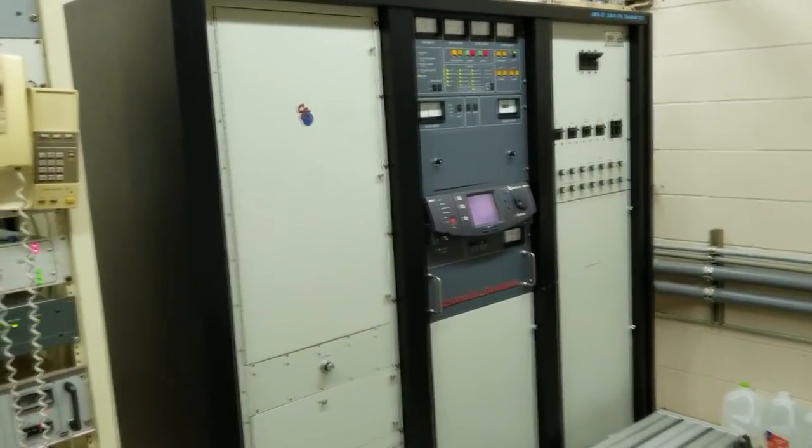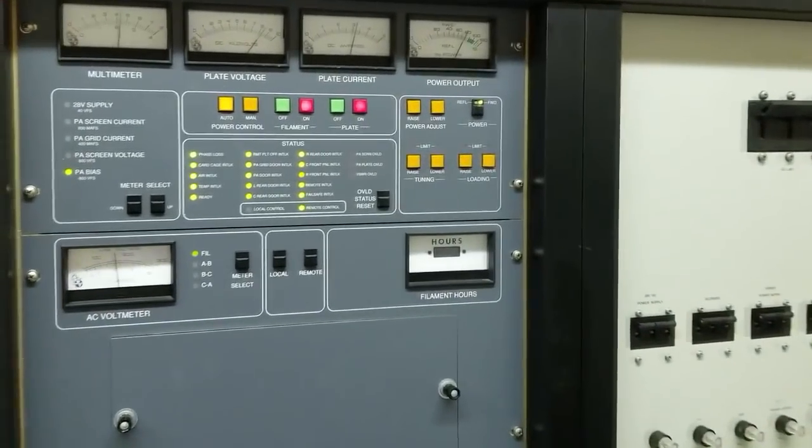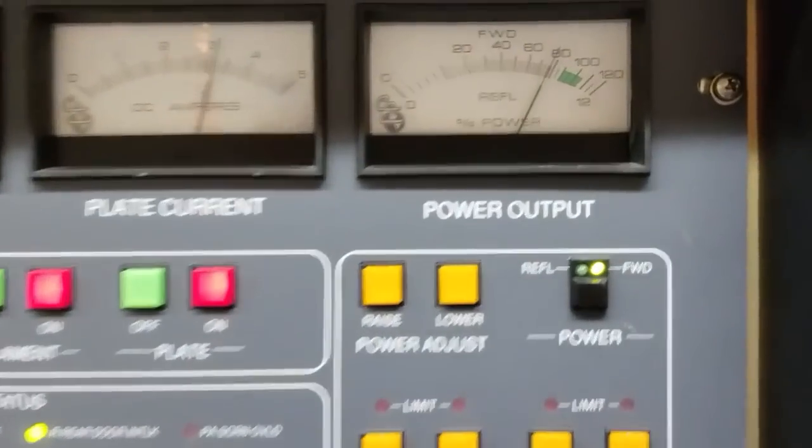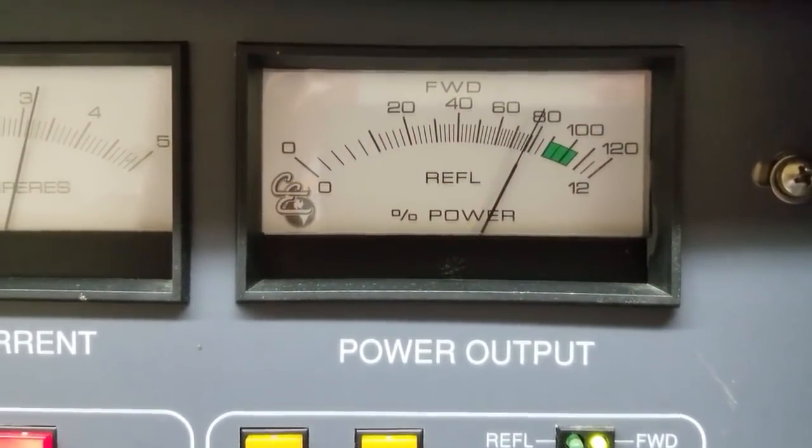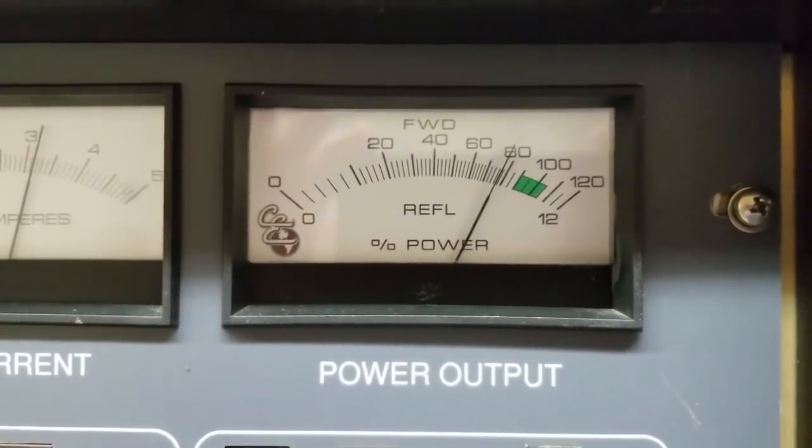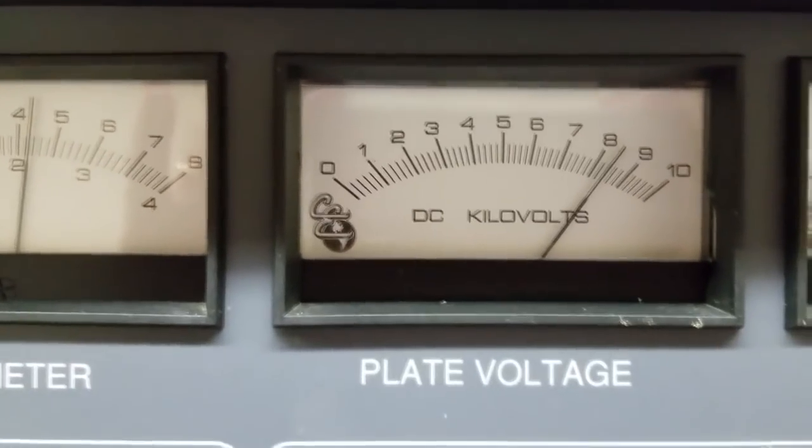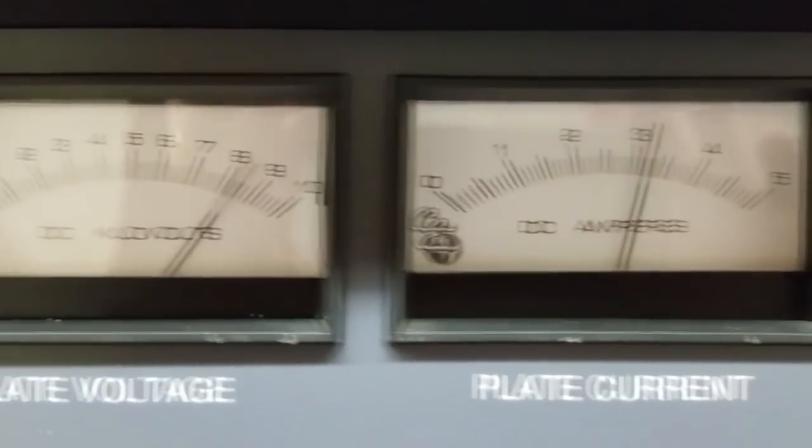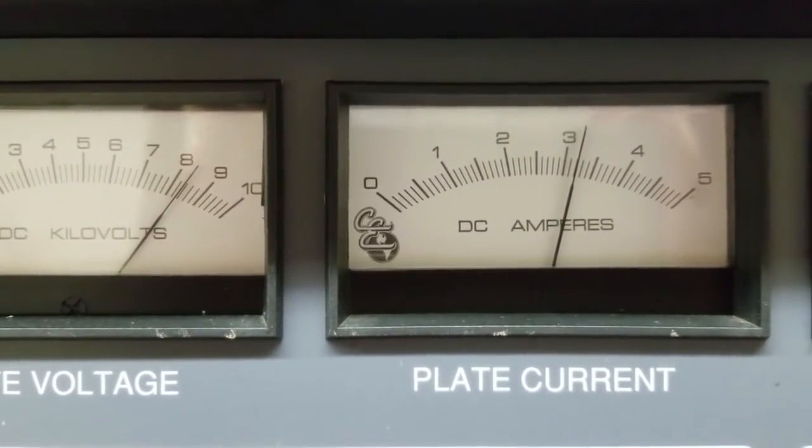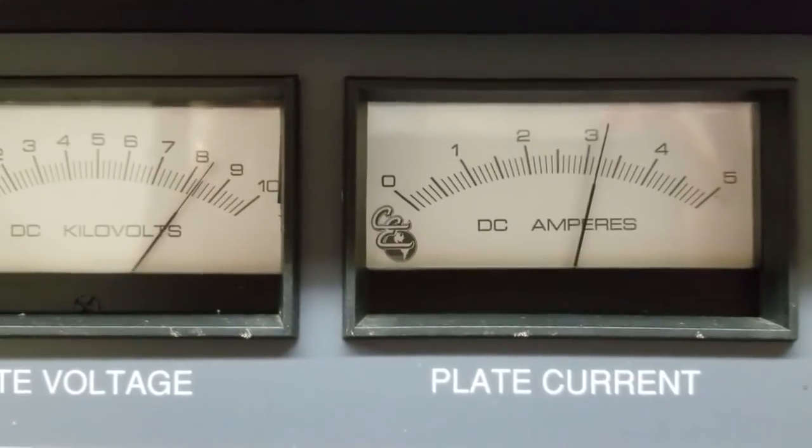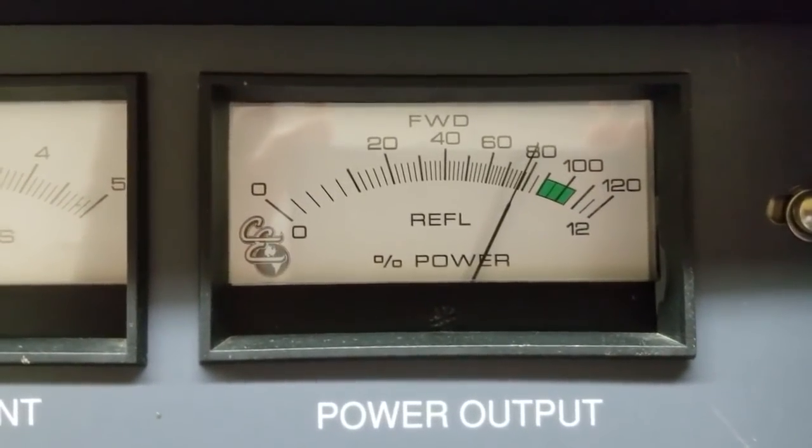If we look up here on the transmitter itself, we'll see that the power is down which is typically what happens when these begin to get weak. We're down to 77% there. So I've cranked up the filament voltage to try to milk out as much life out of the tube as I could. We're running about 8.4 kilovolts at about 3.2 amperes of plate current. So we're not making full power. And it's time for a change.